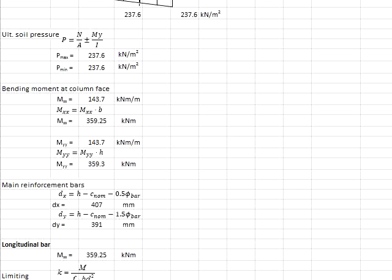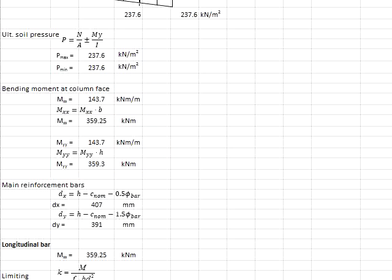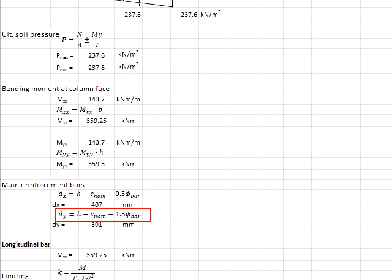As this spreadsheet is developed in a general manner, which is also applicable for rectangular sections, the steps here show calculations for both directions. For square foundations, the more critical plane will be at dy, which is shorter — that means the transverse location of the reinforcement bar. The dy is calculated as the height of the foundation minus the nominal cover minus 1.5 times the bar size, giving 391 mm.